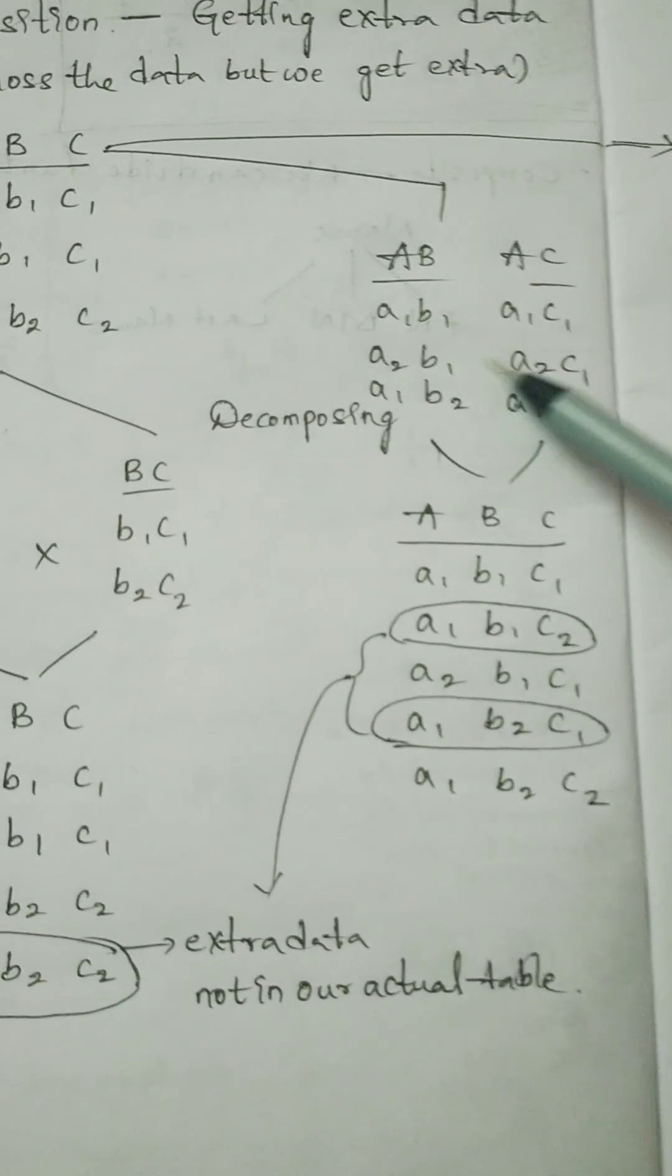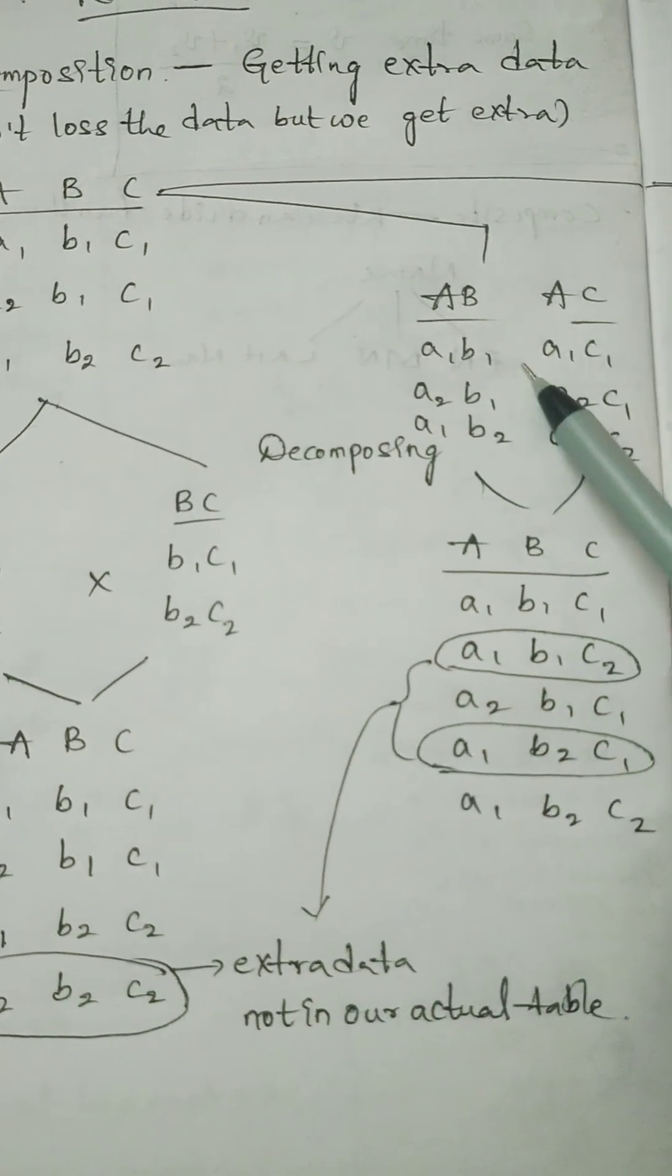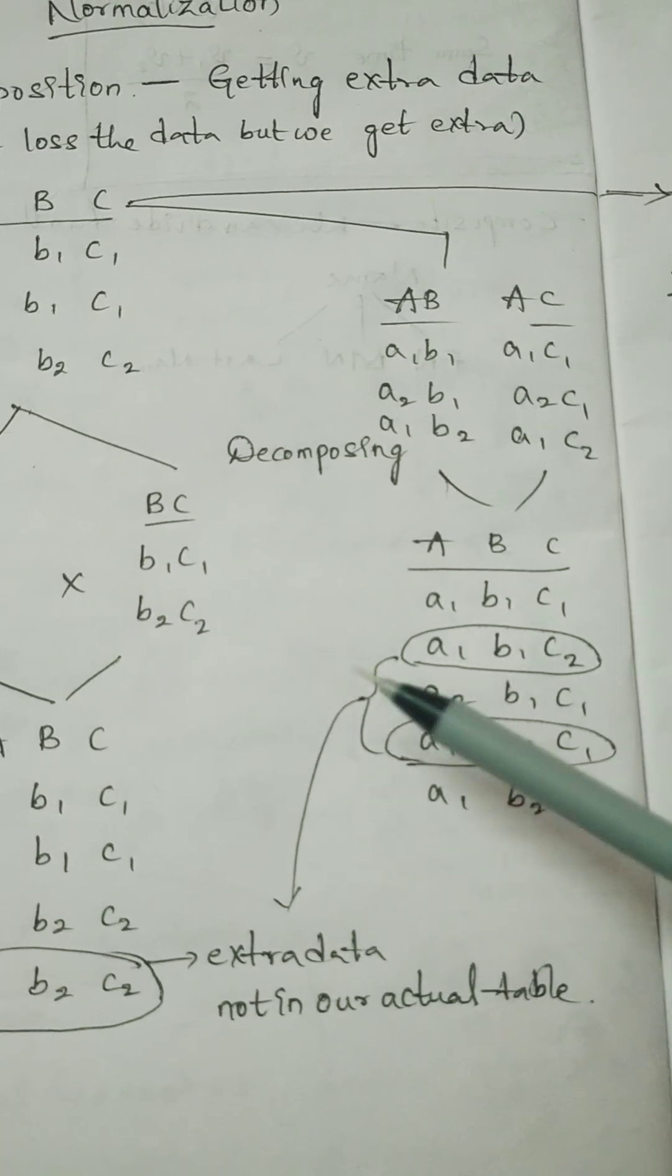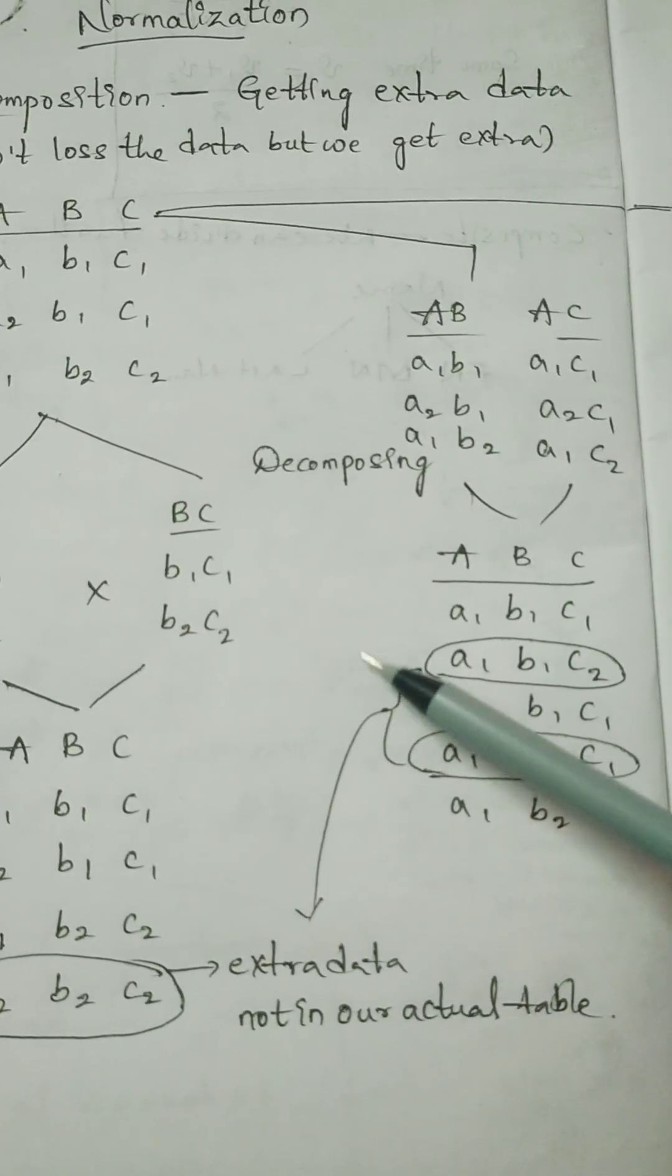And suppose whenever we divide the data set into AB and AC. Here also we are getting some other two tuples extra. It is also one kind of lossy decomposition.